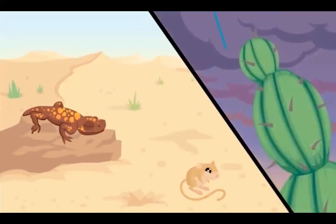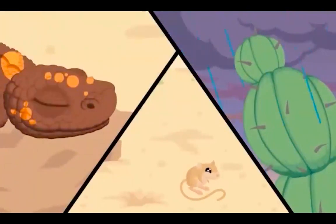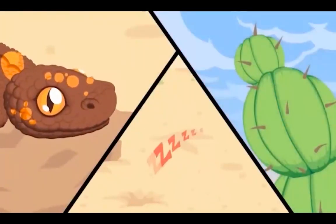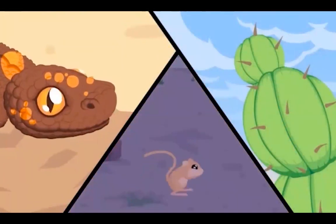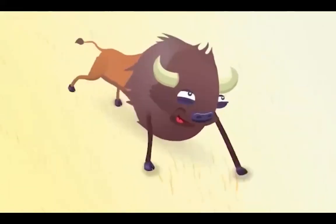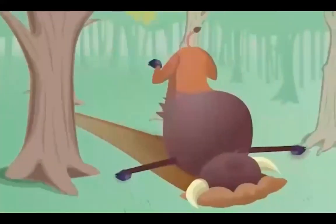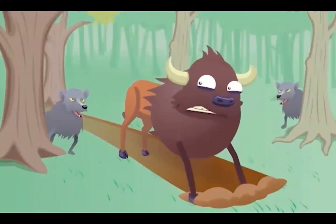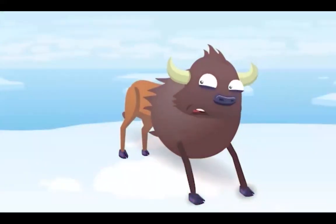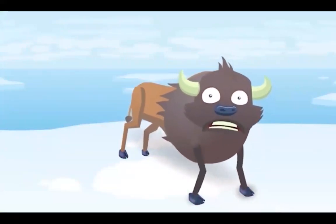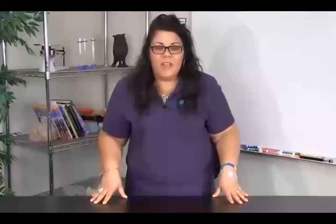The cactus stores water in its stem. The Gila monster has tough skin to hold in moisture. The kangaroo rat is nocturnal, avoiding daytime temperatures. The bison fits well on the prairie with plenty of grass and open space to run with its specially adapted hooves. The heron, the wood duck, and the alligator all survive best near the bayou because of their adaptations that help them beat the heat and use the water to find food.